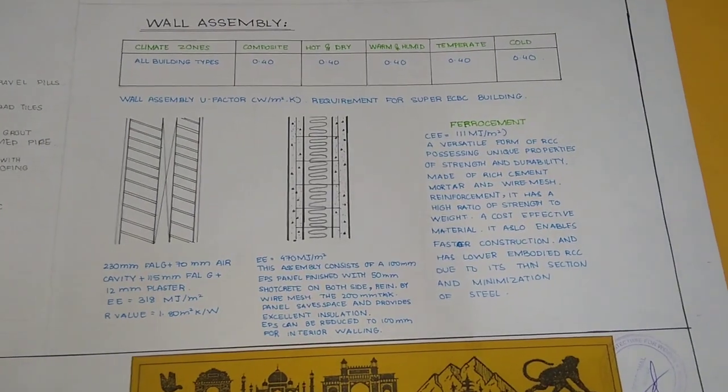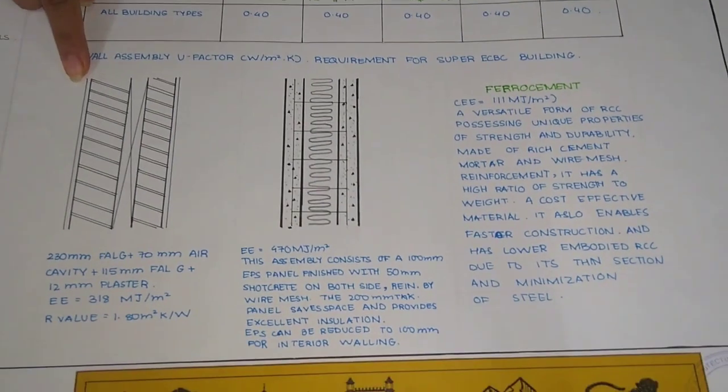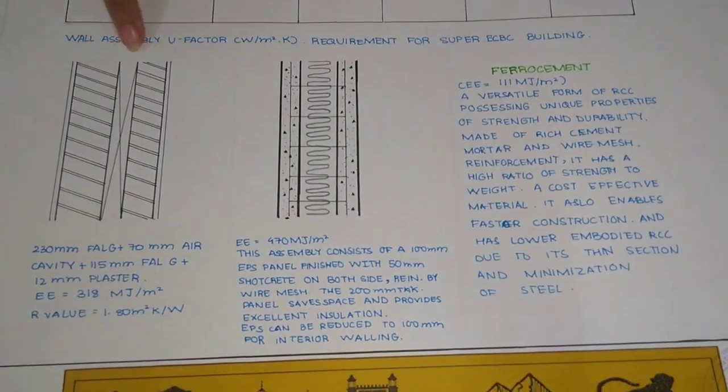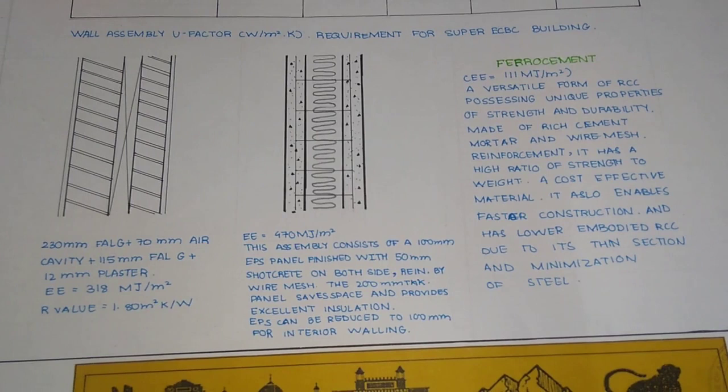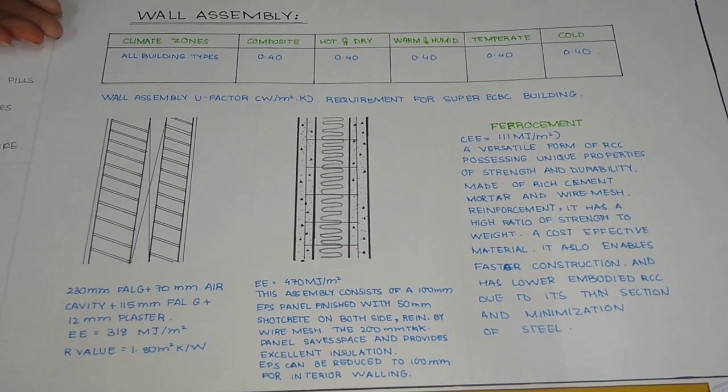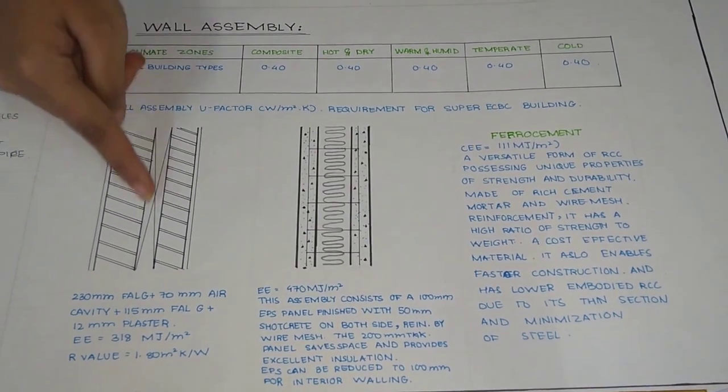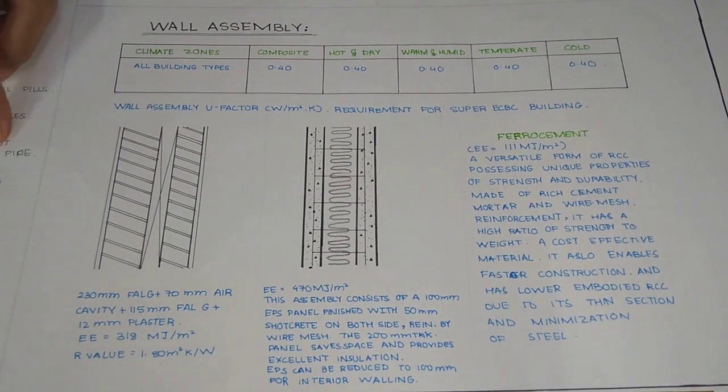The wall is something that I've used here. Here is a ferrocrete wall and a cavity wall. The cavity wall reduces the heat intake inside and keeps the interior cooler. Even in the olden palaces such as Agra Fort, water was added into this cavity wall to keep it cooler.